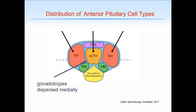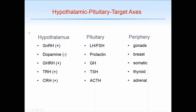Here are the five hypothalamic-pituitary target axes. GnRH, secreted by the arcuate nucleus, primarily travels through the median eminence where it's secreted into the pituitary portal circulation, binds to receptors on the gonadotrope, which secretes LH and FSH that travel to bind receptors on the ovaries and testes to produce hormones and gametes. The prolactin system is unique in that it's primarily inhibited by hypothalamic factors — specifically dopamine has a substantial inhibitory effect on the secretion of prolactin — while the other axes are primarily stimulated by hypothalamic factors.